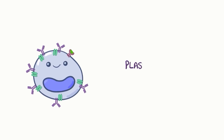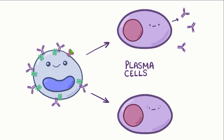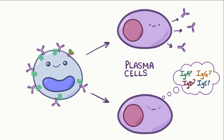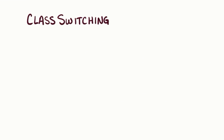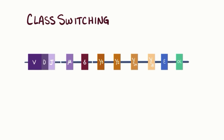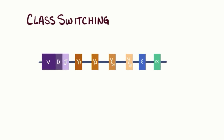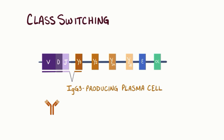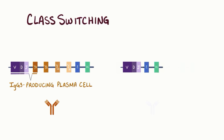Some of these B cells turn into plasma cells, which produce IgM, whereas other plasma cells undergo class switching. Class switching is the process of DNA segments being sliced, with pieces removed, and the remaining pieces get stuck back together so that ultimately the gene itself encodes a different type of heavy chain. If only some of the DNA is cut out, the result might be an IgG3-producing plasma cell, and if a lot is cut out, the result might be an IgE-antibody-producing plasma cell.